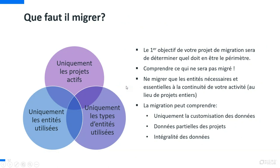Qu'est-ce qu'il faut migrer ? C'est le premier point à savoir : qu'est-ce qu'on va récupérer, quel est le travail de préparation, et surtout comprendre ce qu'on ne pourra pas migrer — soit parce que techniquement on ne pourra pas le faire, soit parce qu'il ne sera pas nécessaire de récupérer l'historique de tous les projets, voire les projets archivés ou désactivés dans ALM.NET. On va se focaliser sur migrer uniquement les entités nécessaires à la continuité de l'activité et des projets en cours.